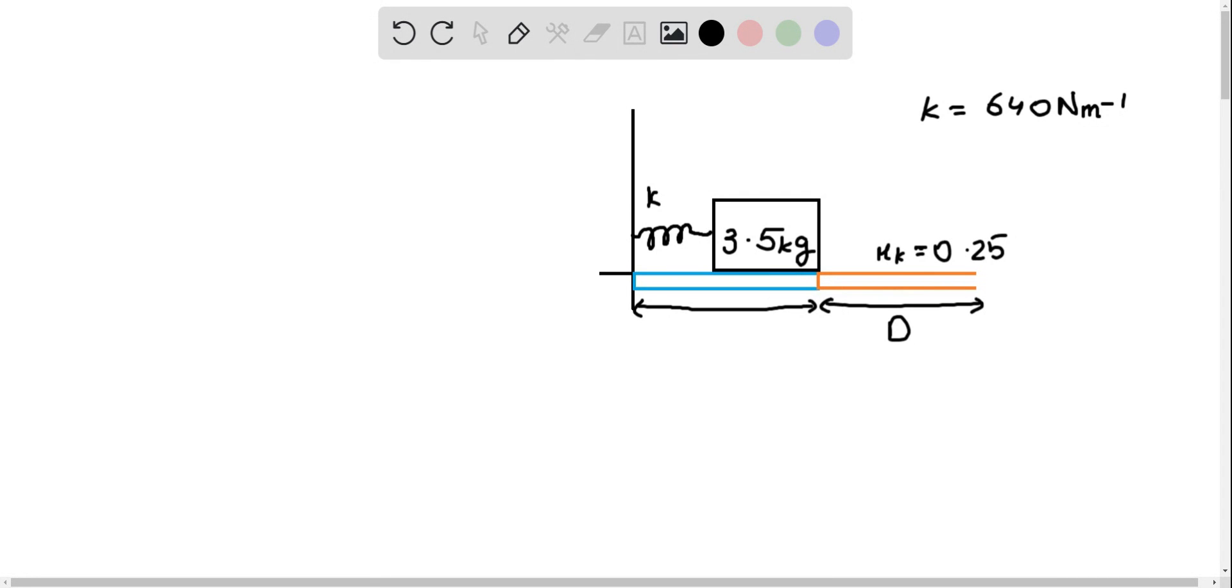In this problem, we're given a 3.5 kg block that travels over a smooth surface that I have highlighted in blue, and then it transitions to a rough surface that I've highlighted in orange with a kinetic coefficient of friction of 0.25. It's connected via a spring that has a spring constant of 640 Nm and the block has a mass of 3.5 kg.